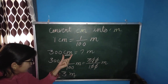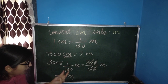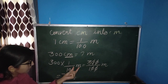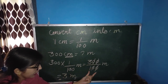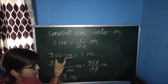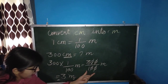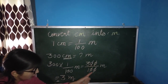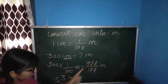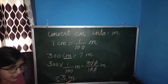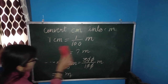We write the value of cm: 300 multiplied by 1 by 100 meter, giving 300 by 100. Cancelling two zeros from both, our answer is 3 meter. So how many meters in 300 cm? The answer is 3 meters.